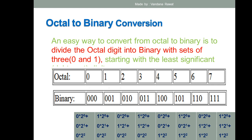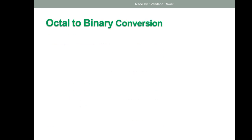For example, for 7 you've written 111. To verify: starting from the LSB, 1×2⁰ + 1×2¹ + 1×2² = 1 + 2 + 4 = 7. That confirms you have written the correct binary number. If you know the binary representations of the octal digits, you can solve any numerical conversion.